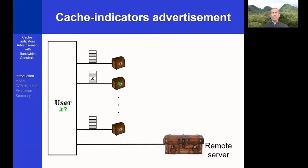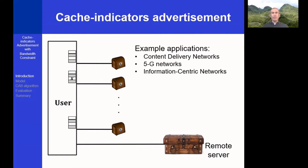Using these indicators, the user can select a cache to fetch the requested datum from. Such indicators are widely used in multiple networking domains, such as content delivery networks, 5G networks, and information-centric networks.